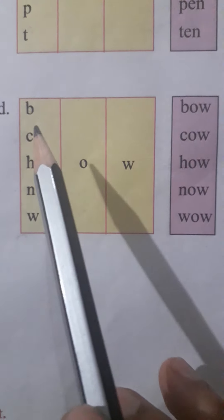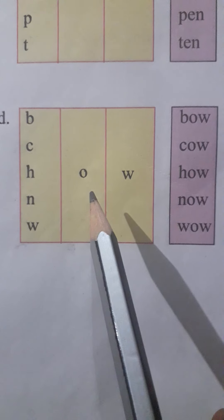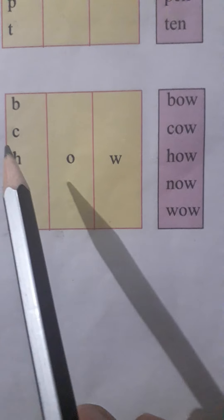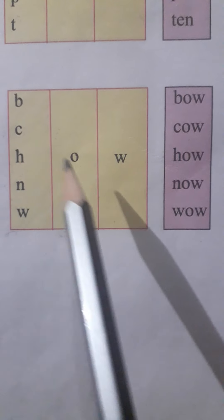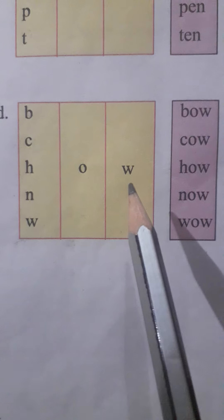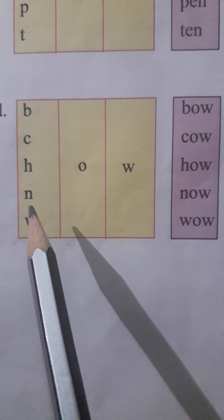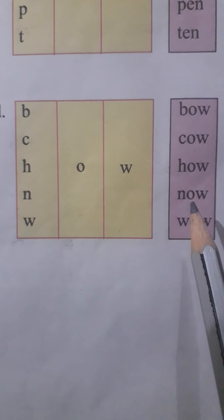Next is B-O-W bow, C-O-W cow, H-O-W how, N-O-W now.